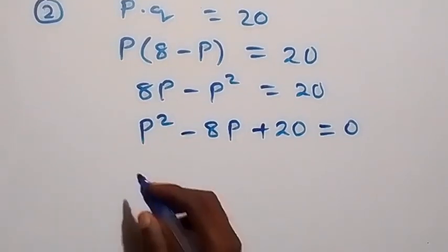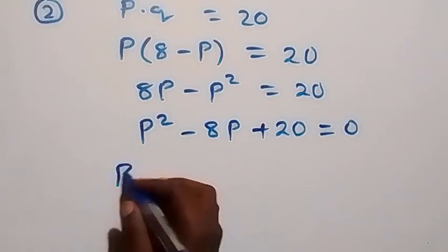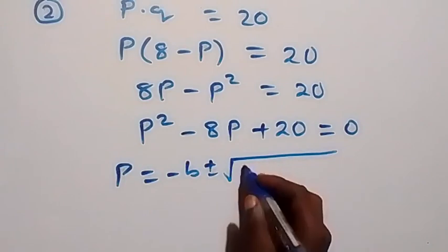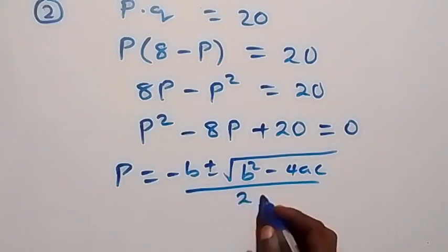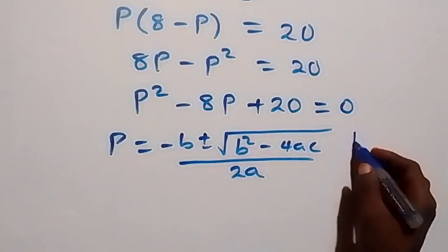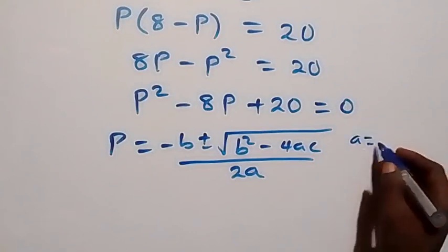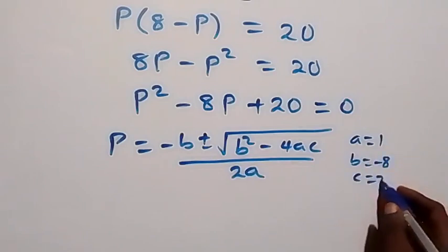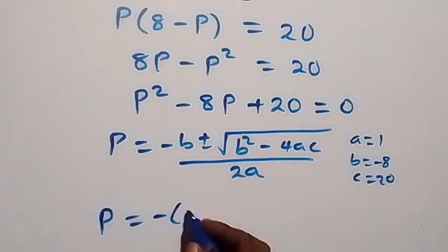We solve this quadratic equation using the quadratic formula: p equals negative b plus or minus the square root of b squared minus 4ac, all over 2a. Identifying our coefficients: a equals 1 (coefficient of p squared), b equals negative 8, and c equals 20. We substitute these into the formula.